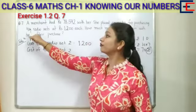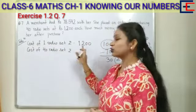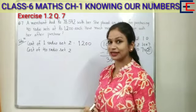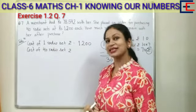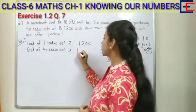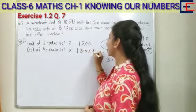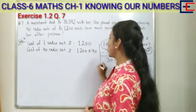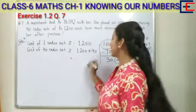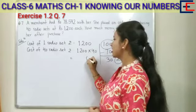So, how much money do we need to calculate? We need to find the cost of 40 radio sets. So 1,200 multiplied by 40. We can do it directly. Let's work it out: 1,200 multiplied by 40.